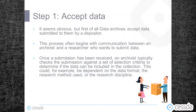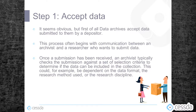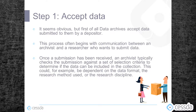The first step: accept data. It seems obvious, but first of all data archives accept data submitted to them by a depositor. This process often begins with communication between an archivist and a researcher who wants to submit data. Once a submission has been received, an archivist typically checks the submission against a set of selection criteria to determine if the data can be included in the collection. This could for example be dependent on the data format, the research method used, or the research discipline.